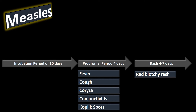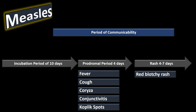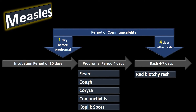To summarize the phases: a 10-day incubation period, a prodromal phase of about four days with fever, three C's, and Koplik spots, and then the rash phase with that characteristic rash. Regarding the period of communicability, a person is contagious about one day before the prodromal symptoms start up to four days after the rash begins.